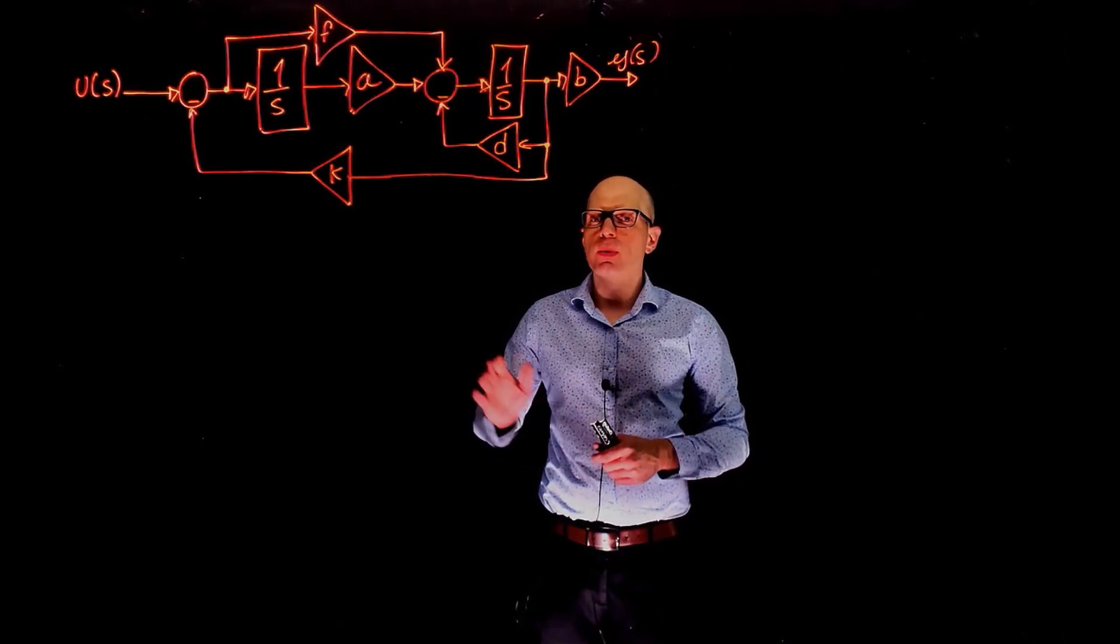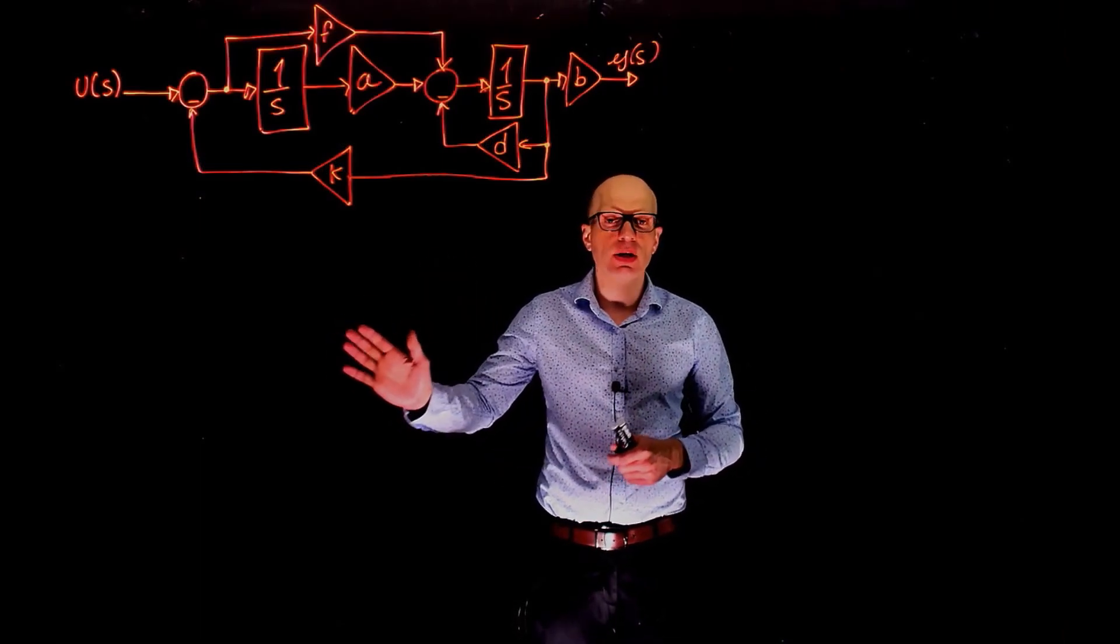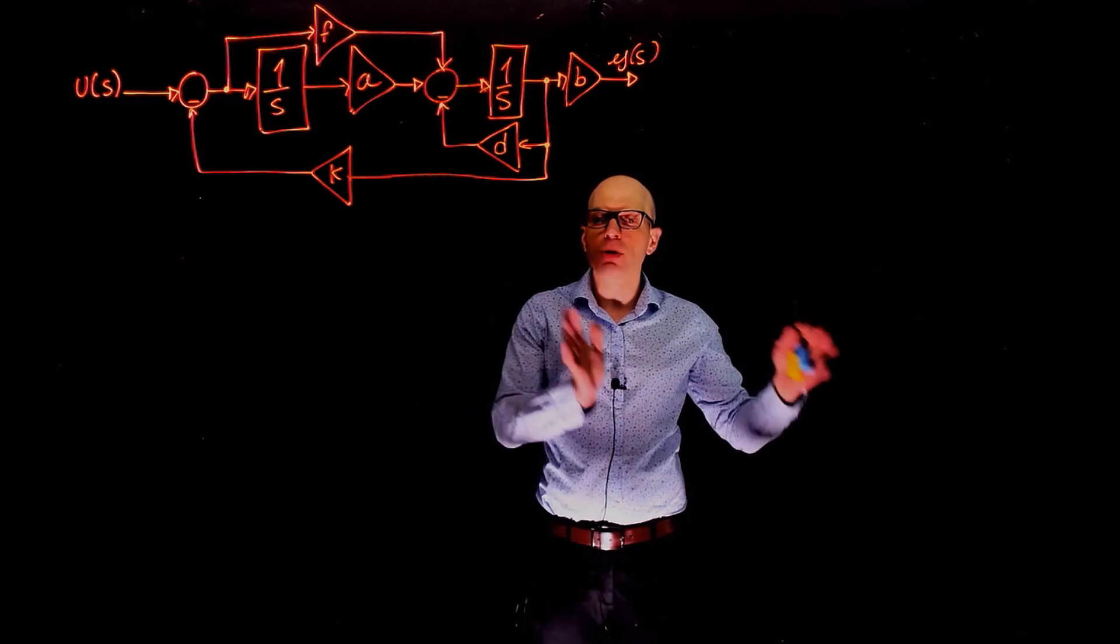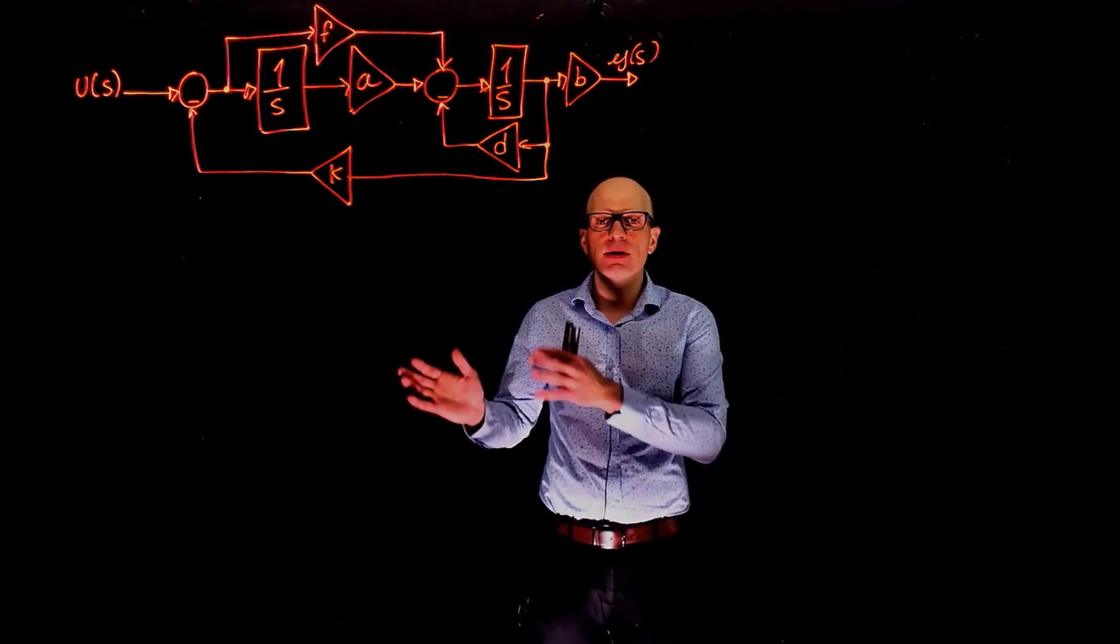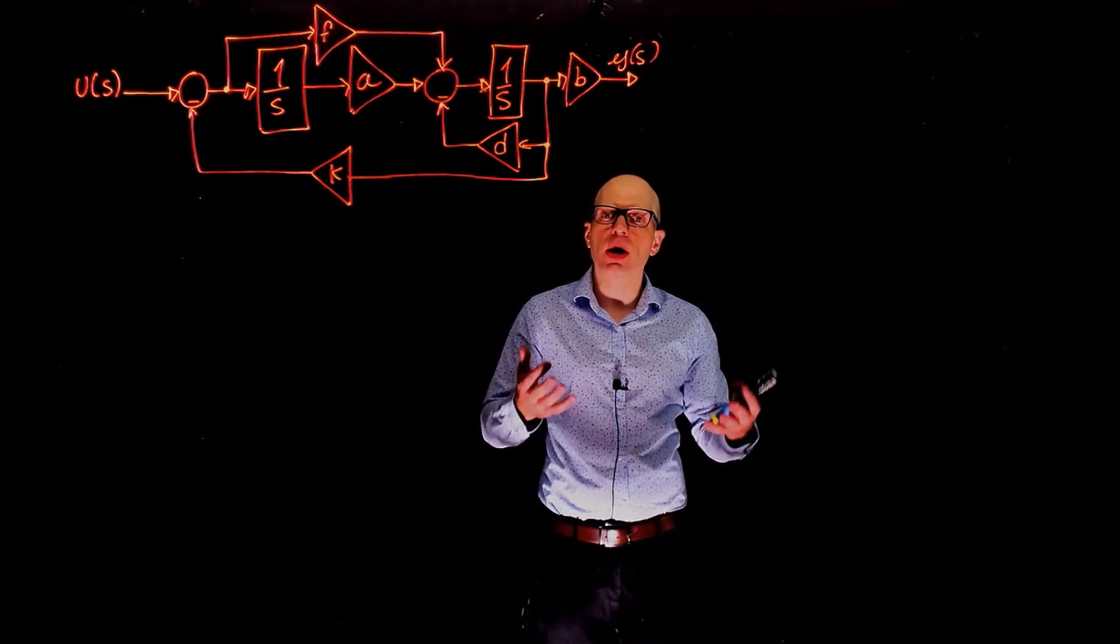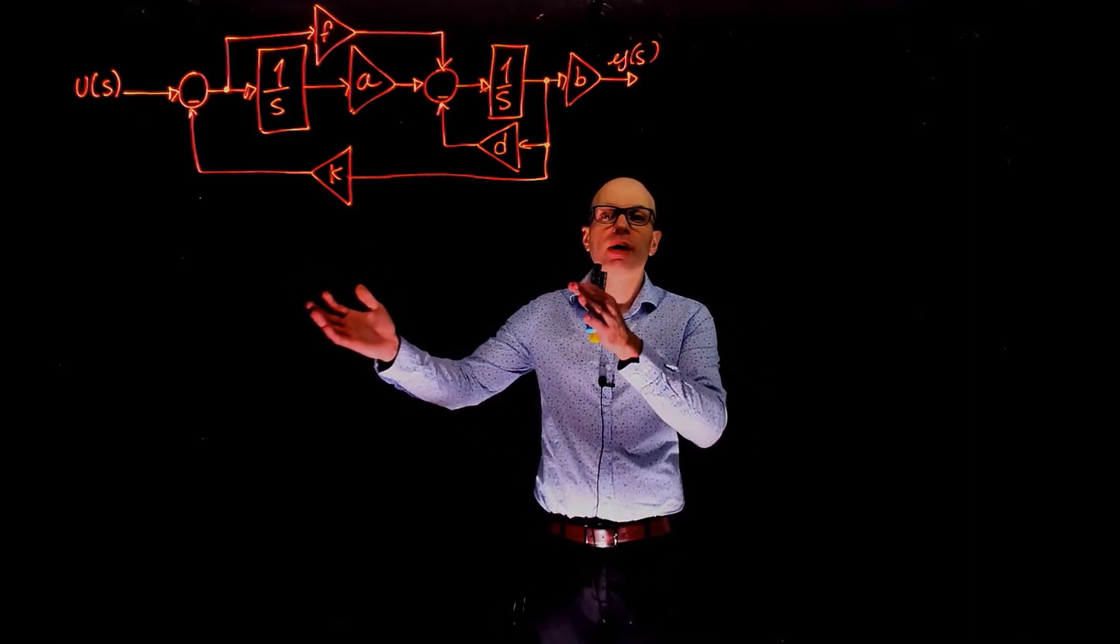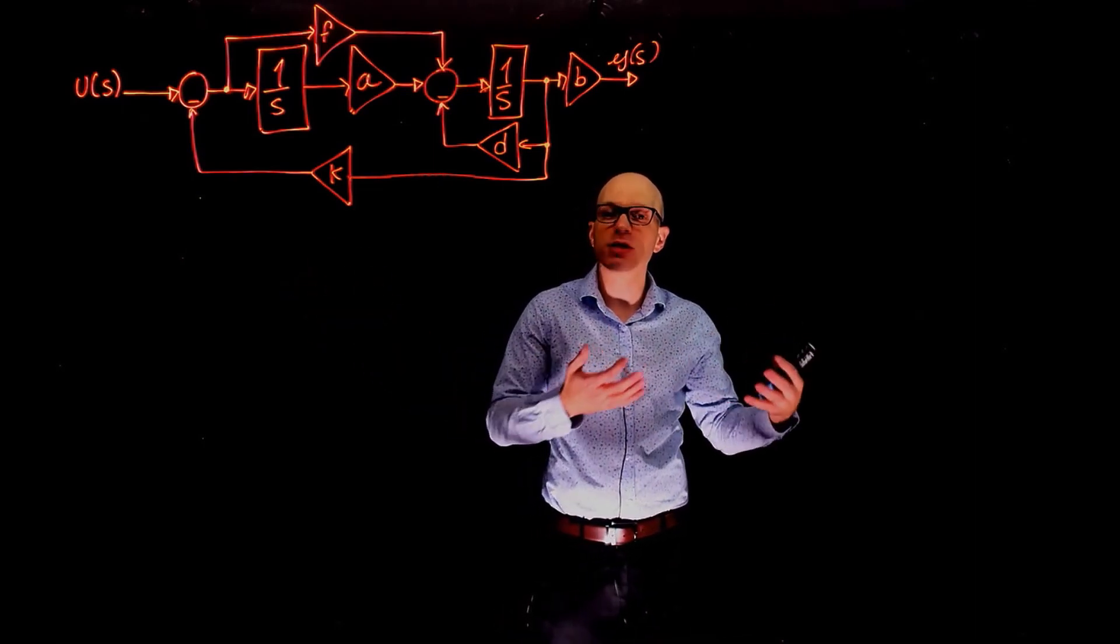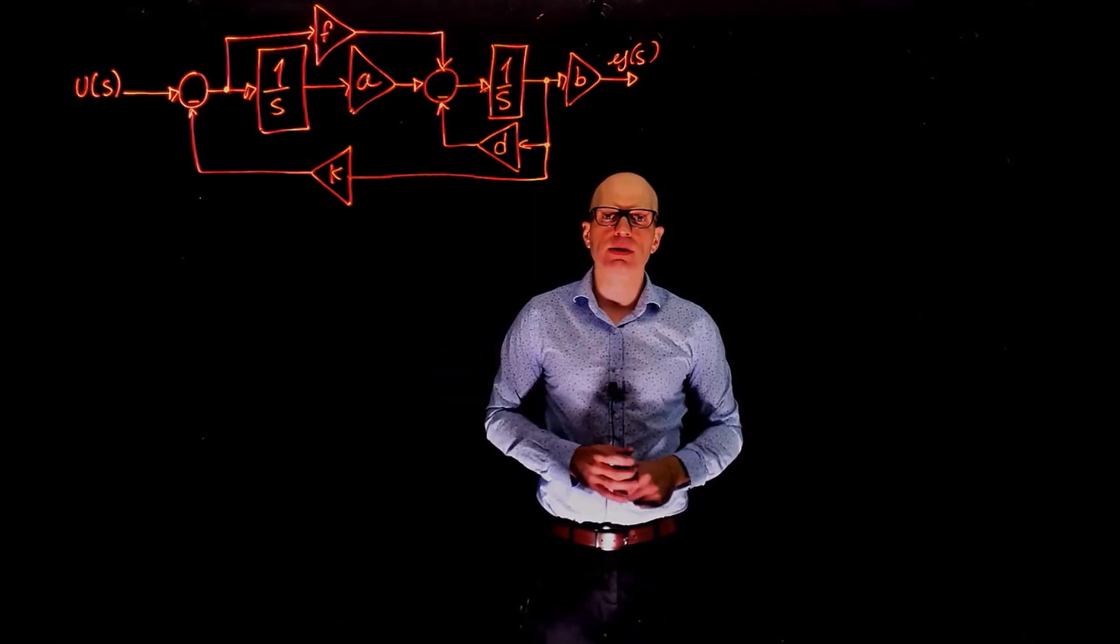In one of the previous examples, we went from having a set of equations in state space to the block diagram representation of that system of equations. In this example here, we are going to do the opposite. We have this block diagram, and the idea is to construct a state space representation of this same system.